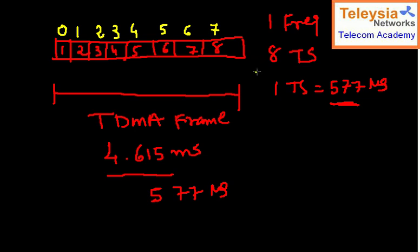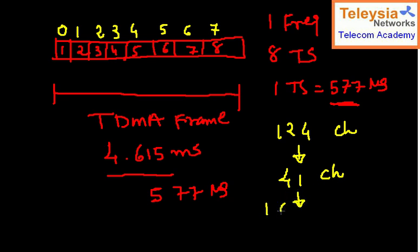In the 900MHz band we have 124 channels, divided among three operators, so each operator gets 41 channels. In each channel I can accommodate eight users. However, not all of that capacity can be used for traffic — we need some signaling as well.